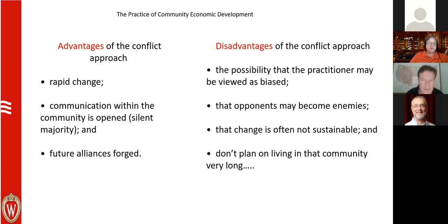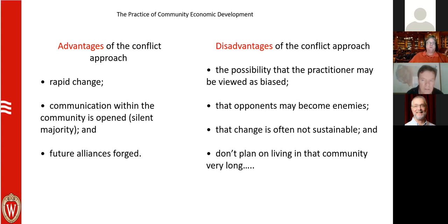A lot of community organizers move around because they burn bridges or get labeled as single-issue or biased. For Extension, this is a very difficult role to assume because we take great pride in presenting unbiased information — here's what the research says, here are the pros and cons, the community makes the decision. The conflict approach pushes in the opposite direction, so if a practitioner assumes an advocacy role, it must be done with great care.